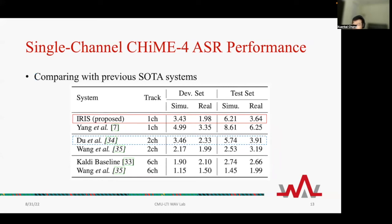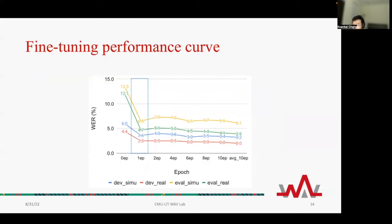Here we list several previously proposed SOTA models using single-channel, two-channel, and six-channel input. We can see that our proposed model is very promising — it is even comparable to the CHiME-4 Challenge best two-channel results, marked in the blue rectangle. Here is a figure showing the WER at different fine-tuning steps. It shows an interesting result that fine-tuning for only one epoch is already very good and is enough to handle most of the cases.